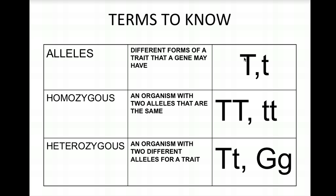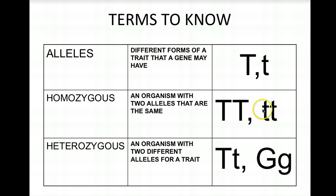Homozygous refers to two alleles that are the same. For each trait you have two alleles. Two uppercase T's represent tall plants because the uppercase T is dominant and will take over. Two lowercase t's represent short plants — the only way to get a short plant — because having two lowercase t's means the recessive trait shows up. Homo means same, so both alleles must be the same type.